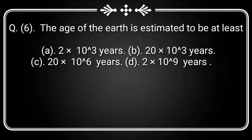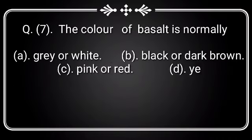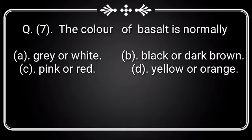Question 6: The age of the earth is estimated to be at least — Option A: 2 x 10³ years, Option B: 20 x 10³ years, Option C: 20 x 10⁶ years, Option D: 2 x 10⁹ years. Answer is Option D: 2 x 10⁹ years.